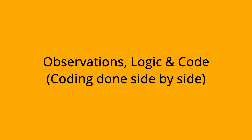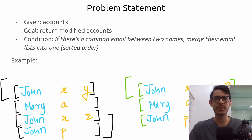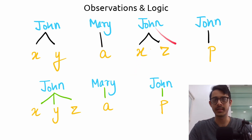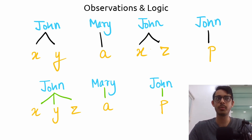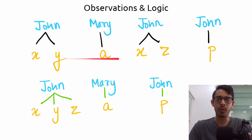Now that we understand the problem, let's talk about the observation logic needed to solve it. I've reformatted the input so we have John with emails X and Y, Mary with A, John with X and Z, and John with P. The goal is to figure out that this John and that John are actually the same person — because they share the common email X — and then unite all their emails into one giant merged list.